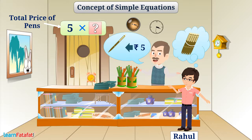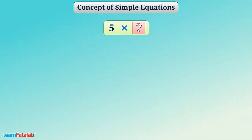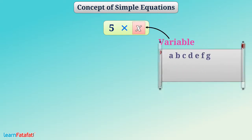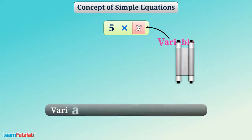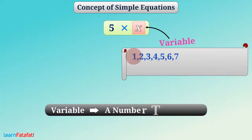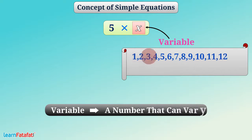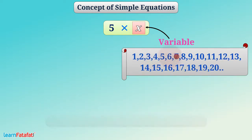It often becomes difficult to do mathematical calculations when it involves blanks. A better way is to write a letter such as x at the place of the unknown number. We call it a variable. We can use any letter as a variable. Variable means a number that can vary — that is, a number which can take different values.